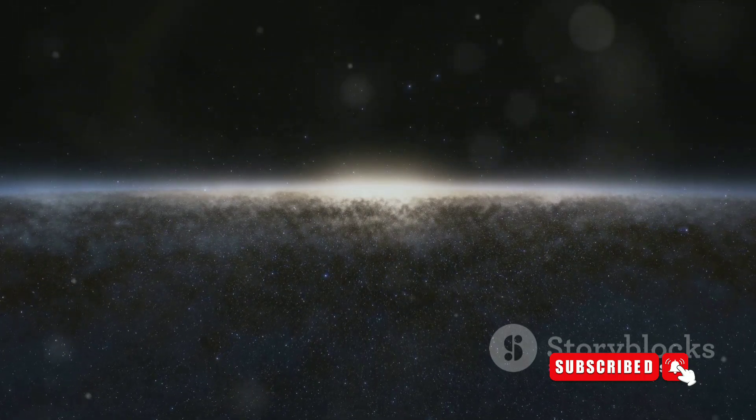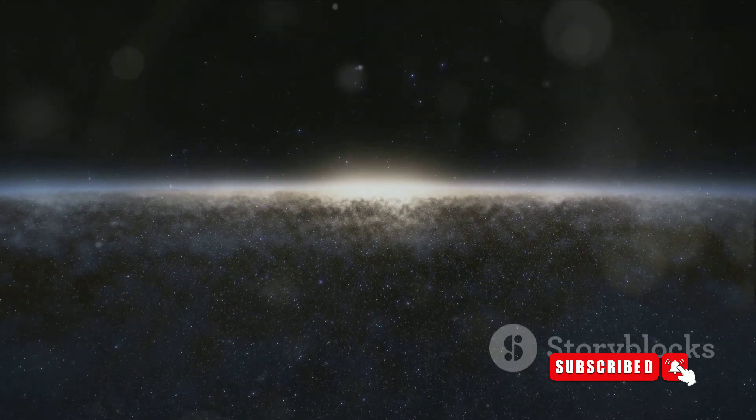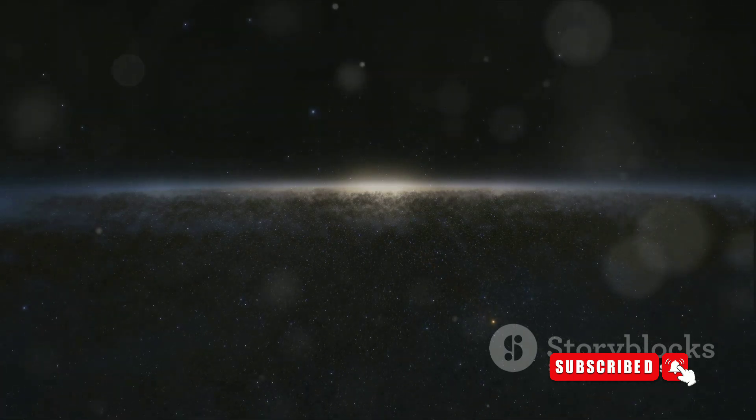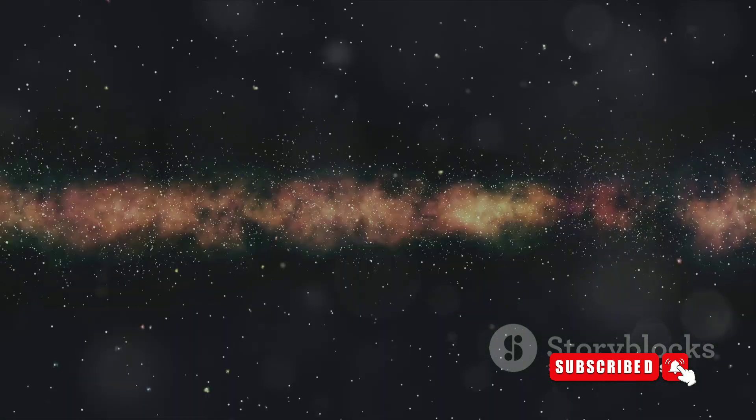A light-year is the distance that light, which is the fastest thing in the universe, travels in a year. It's roughly 6 trillion miles. Now imagine a city so large that it takes light itself 100,000 years to cross from one side to the other. That's our Milky Way.